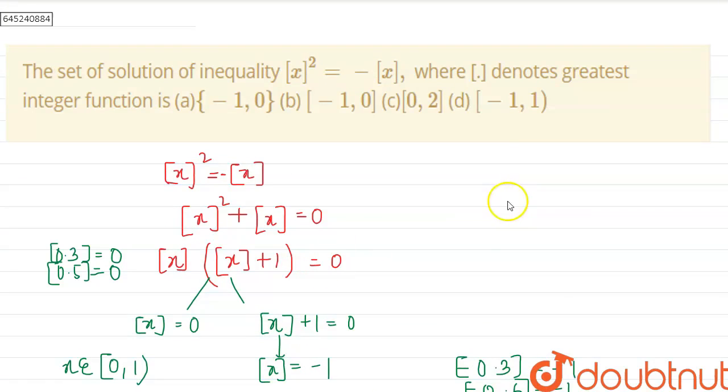Now we can check our options. So option D, minus 1 to 1 is the correct answer. Thank you.